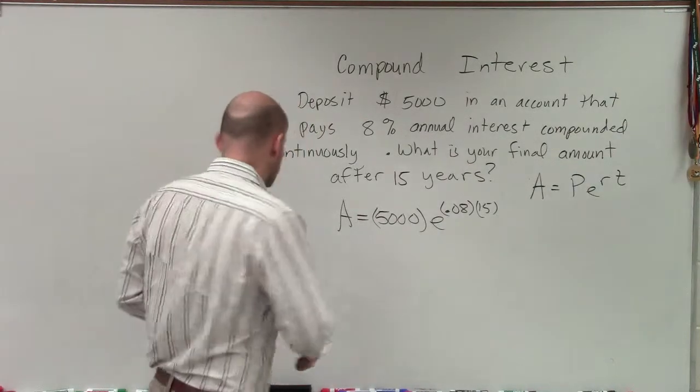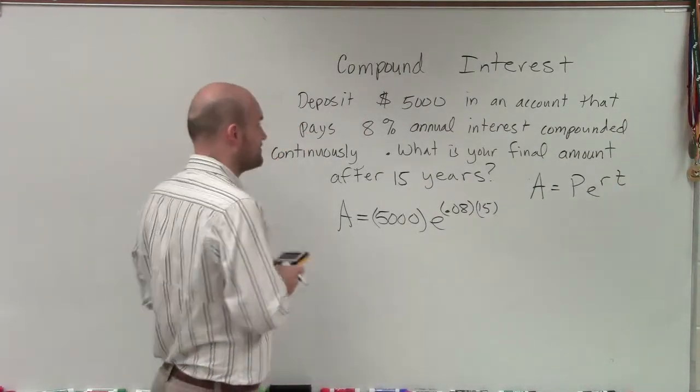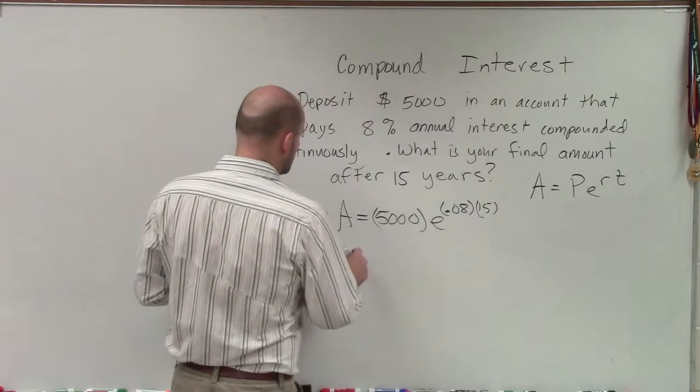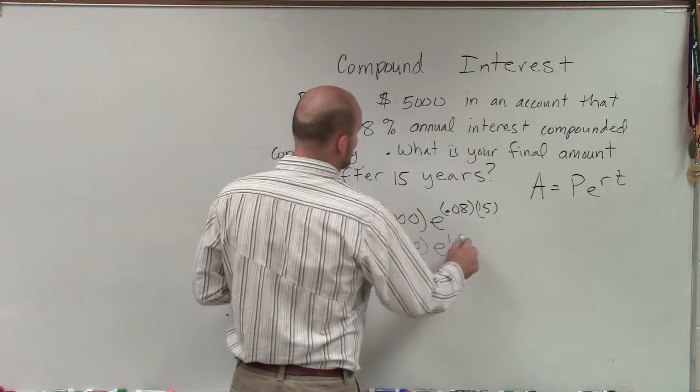But anyways, let's just kind of go through this step by step, just to make sure that we're on the right page. So if I do 0.08 times 15, I get 1.2. So I can say A equals $5,000 times e raised to the 1.2.